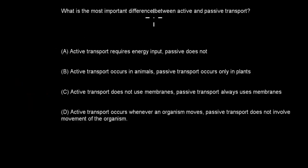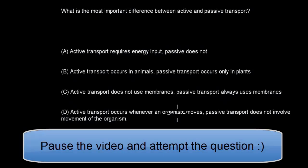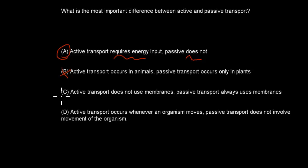Next: Which is the most important difference between active and passive transport? A: Active transport requires energy input, passive does not. B: Active transport occurs in animals, passive only in plants. C: Active transport does not use membranes, passive always uses membranes. D: Active transport occurs whenever an organism moves, passive does not involve organism movement. The correct answer is A. Both active and passive transport occur in animals and plants, both can use membranes, and neither is related to organism movement.